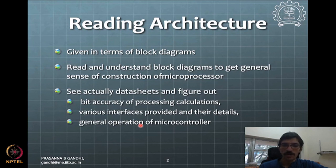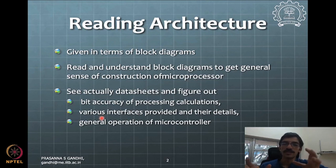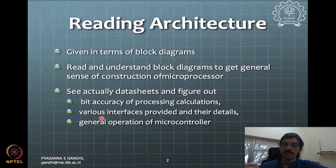In terms of interfaces, the 8085 will not have any external interfaces provided. It will have just some ports available as parallel ports or serial ports. One has to have additional peripheral chips interfaced with this microprocessor to make it into something like a microcontroller — that is a basic difference for hardware interface for exchange of data.